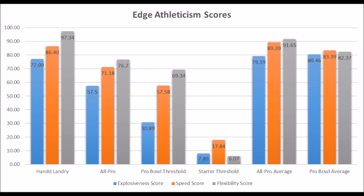Looking at his athleticism data, he had a 77.09 explosive body strength score, an 86.40 speed score, and a 97.34 flexibility score. Where he misses the mark in production data relative to all-pro averages, his athleticism data does fit the bill more so. He's above the bottom-end threshold in explosiveness, speed, and balance for his size, and he's within range of both all-pro and pro bowl player averages.